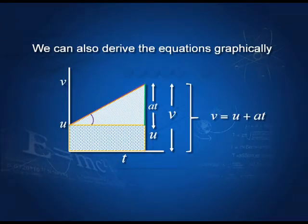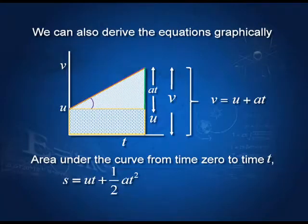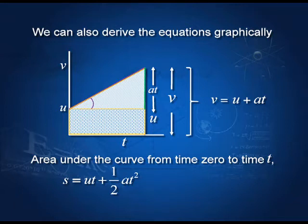We can also derive these equations graphically — in fact, in the last lecture we did this. We can see that the distance covered in the velocity-time graph is equal to the area of a rectangle plus the area of a triangle. Adding them, we get v = u + at. The distance covered is the area under the curve — the area of the triangle plus the area of the rectangle — and we get s = ut + ½at². This we did in the last lecture as well.